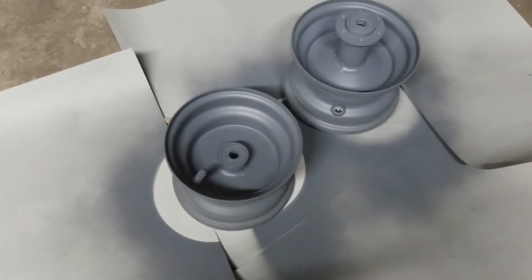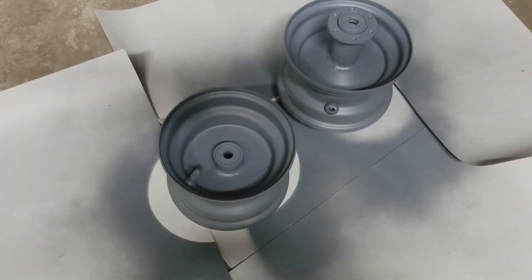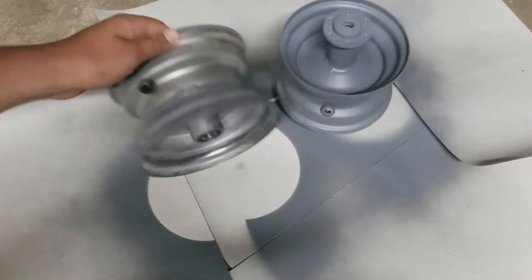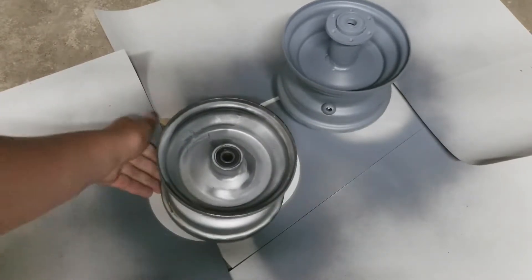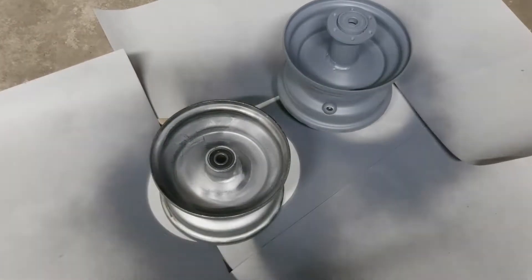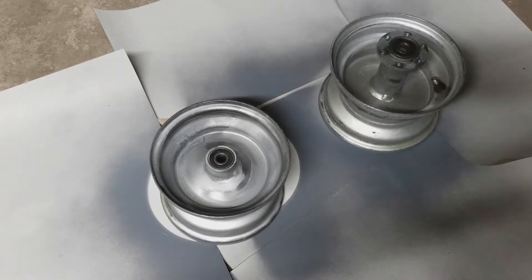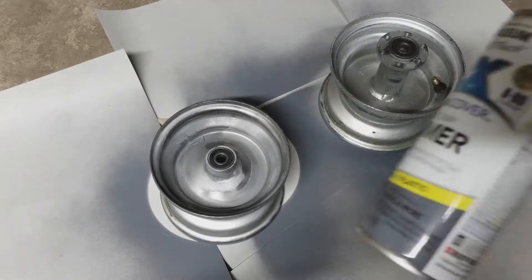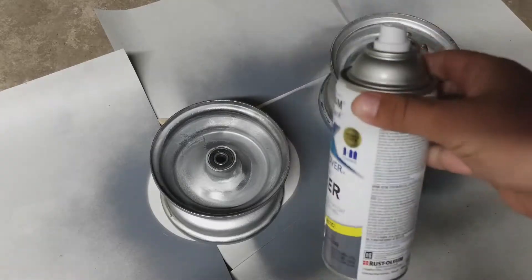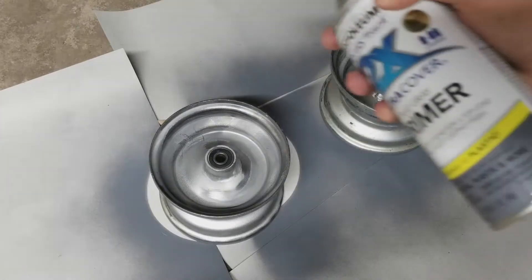Alright, so now this is done drying, the two coats of primer. Now what you want to do is flip it right here. Flip both of them. And then do two coats of it on the other side again. Start adding your primer.